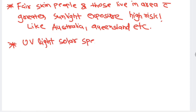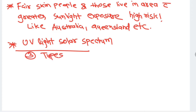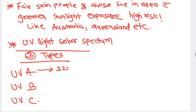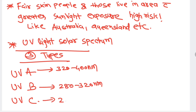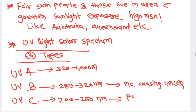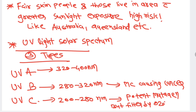Ultraviolet light from the solar spectrum can be of three types: UV-A has a wavelength of 320–400 nm, UV-B has 280–320 nm, and UV-C has 200–280 nm. UV-B is the most common UV ray causing cancer. UV-C is the most potent mutagen causing cancer, but it does not usually cause cancer because it is filtered by the Earth's ozone layer.